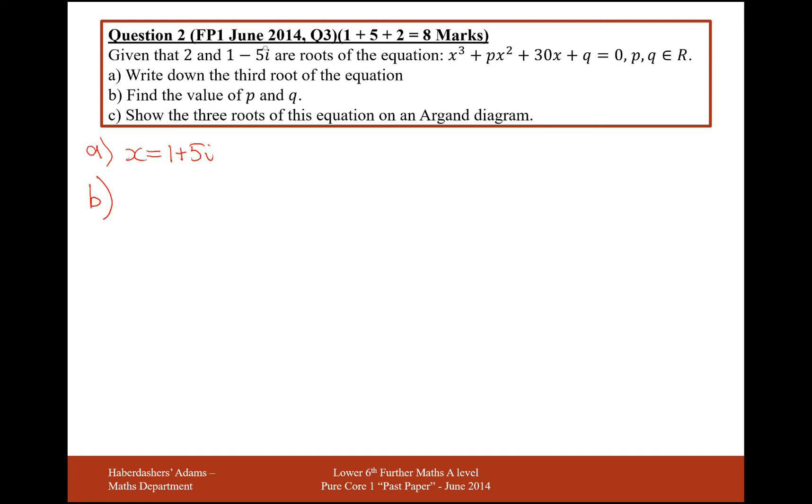So I know that's straight away from it having 1 minus 5i as its other complex conjugate pair. And that's always going to happen, that these will come in pairs when your cubic or any other polynomial only has real coefficients here.